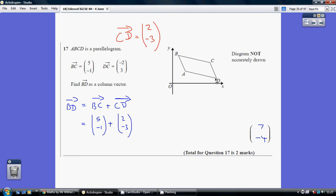C to D is going to be the reverse of D to C. So rather than 2 to the left and 3 up, minus 2 plus 3, it's going to be 2 to the right and 3 down - plus 2 over minus 3.